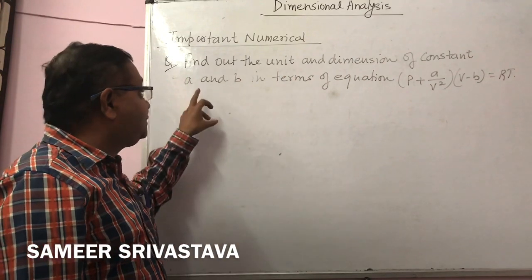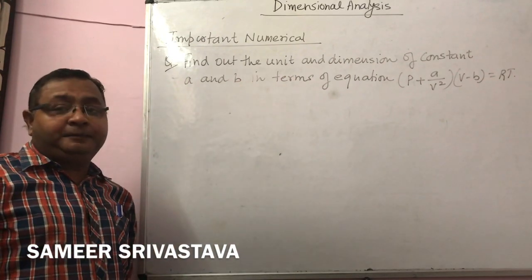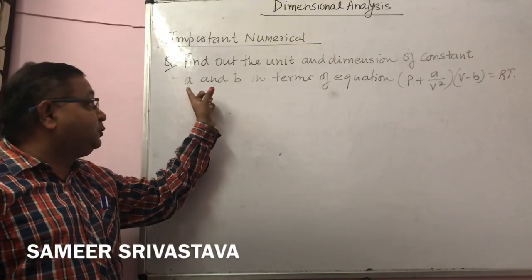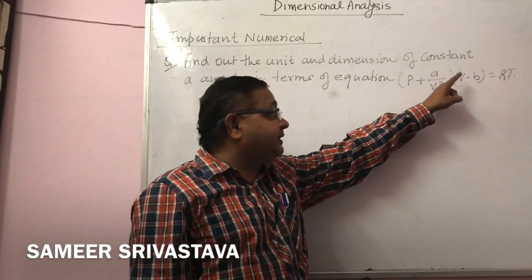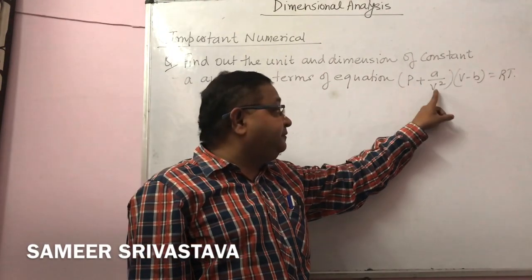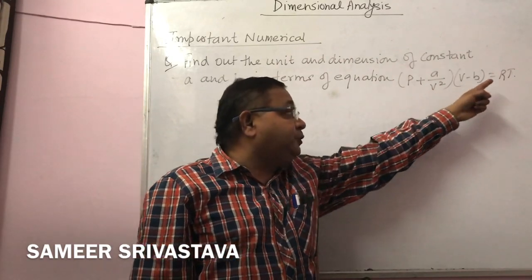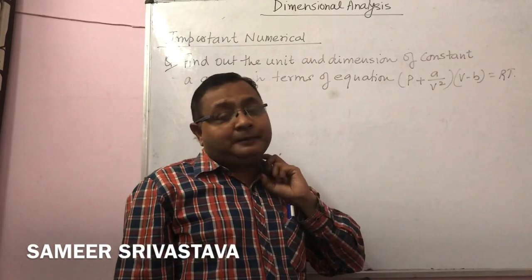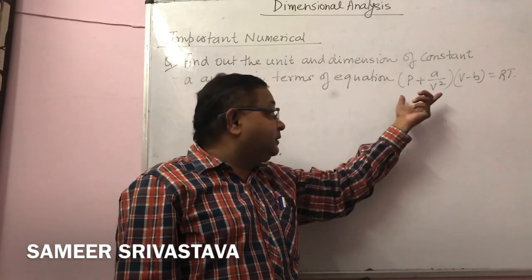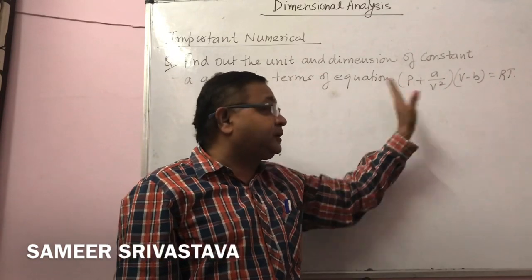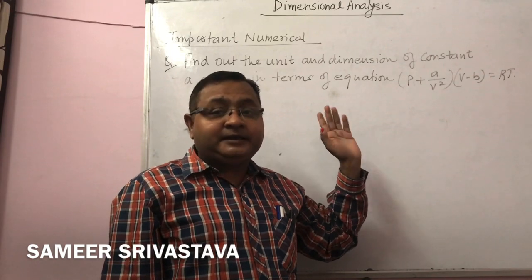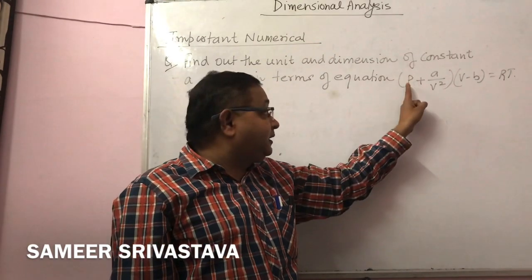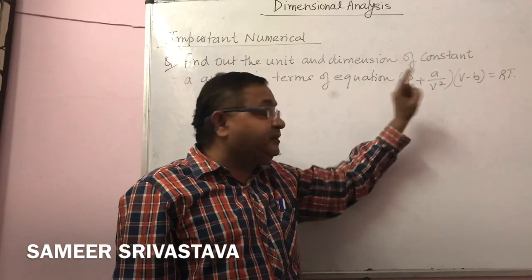The next question: find the unit and dimension of constants A and B in the van der Waals equation (P + A/V²)(V − B) = RT, where P is pressure, V is volume, and T is temperature. Always remember: quantities which have the same dimensions can be added or subtracted. So dimension of P must equal dimension of A/V².